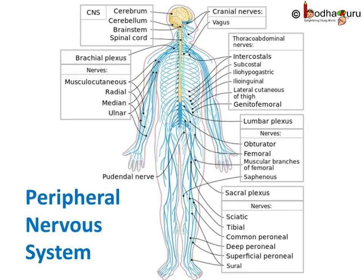The section of the peripheral nervous system that helps in controlling autonomous activities of organs is known as the autonomous nervous system. It controls organs that act involuntarily and regulates body functions like heartbeat, breathing, digestion, urination, pupillary response, etc.